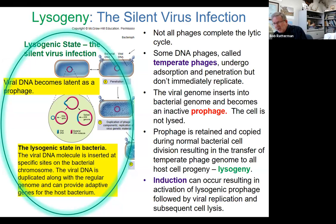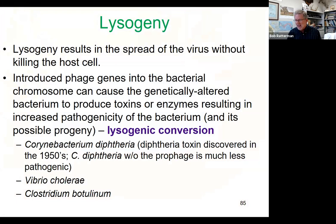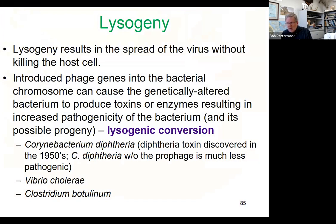Lysogenic conversion is when that cell goes from the lysogenic cycle into the lytic cycle. The cell not only has the instruction booklet in the form of the prophage to make more virus, but it could also make that cell more pathogenic. This sort of marries the transduction concept with the prophage concept, because that pathogenicity transferred to the cell by the virus could have theoretically come from another bacterium via the virus as a vector.